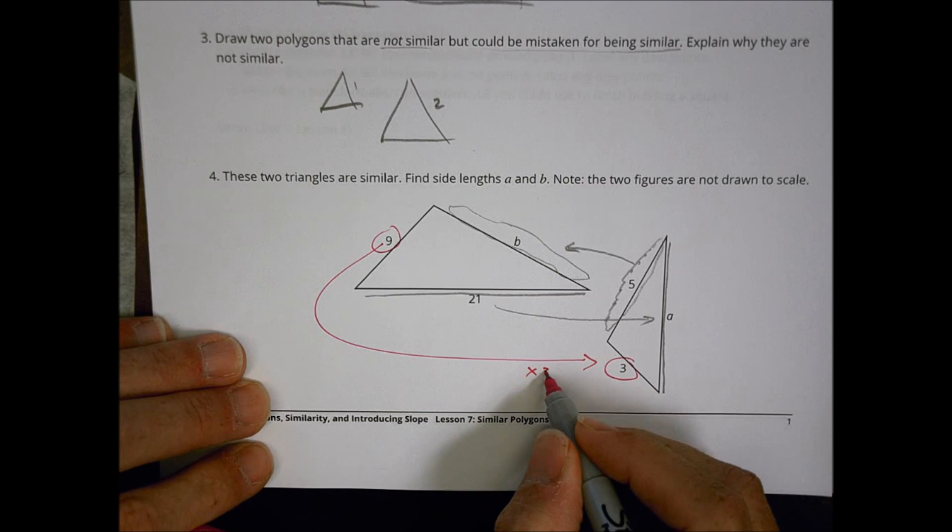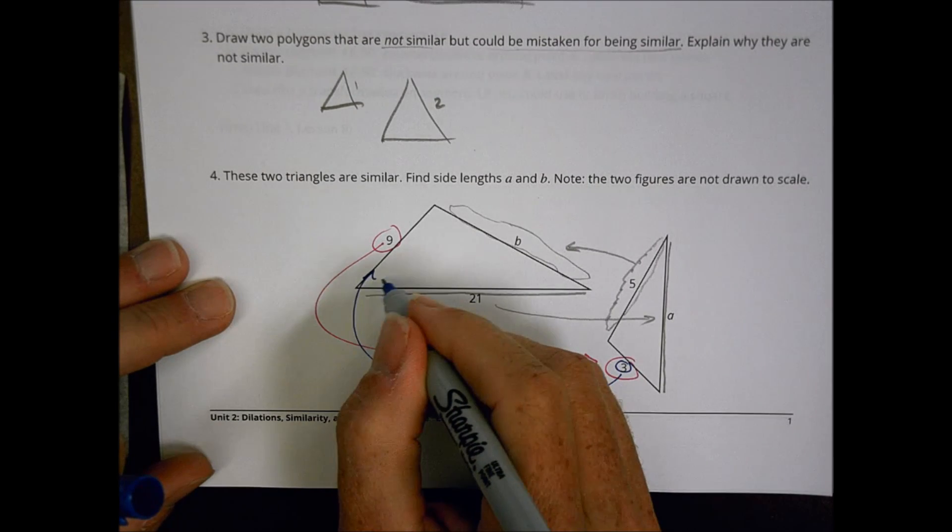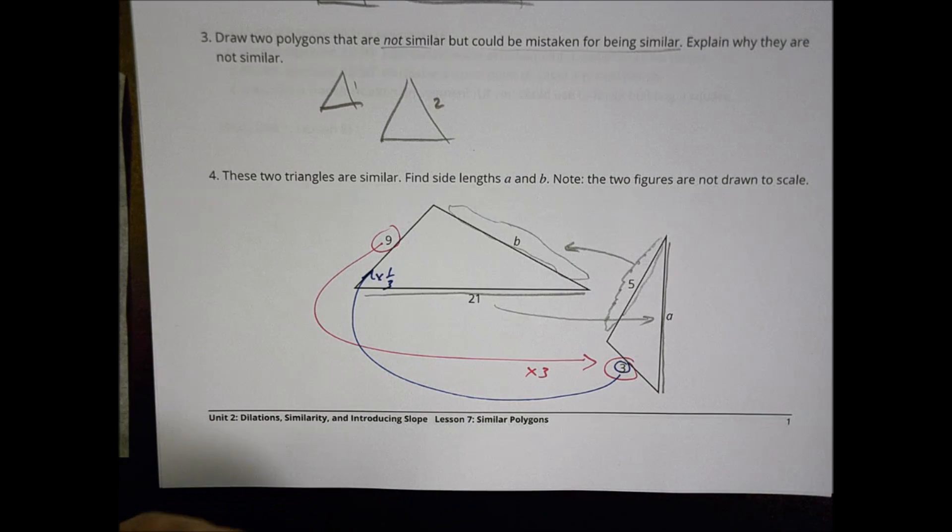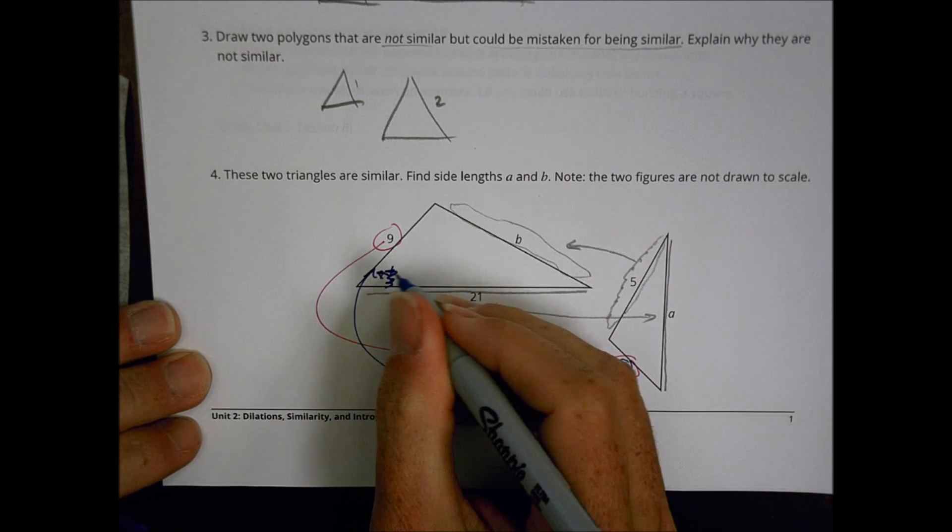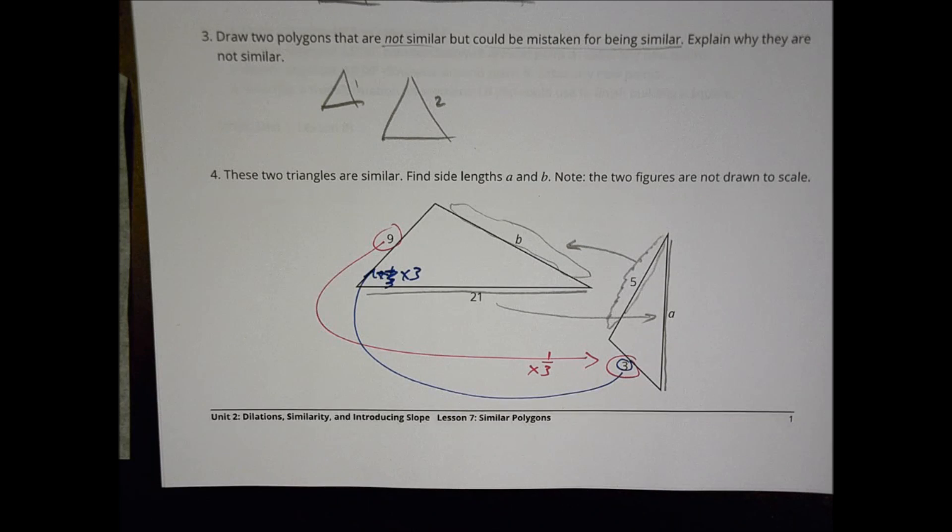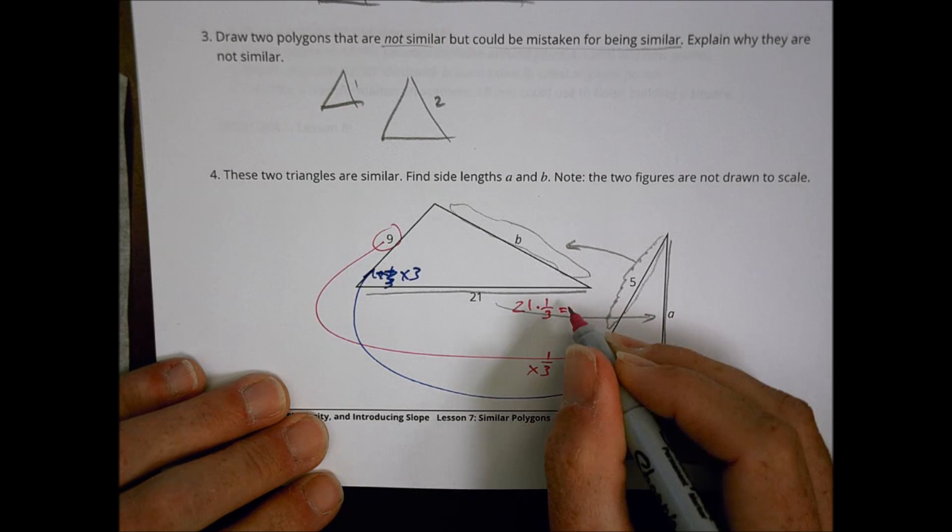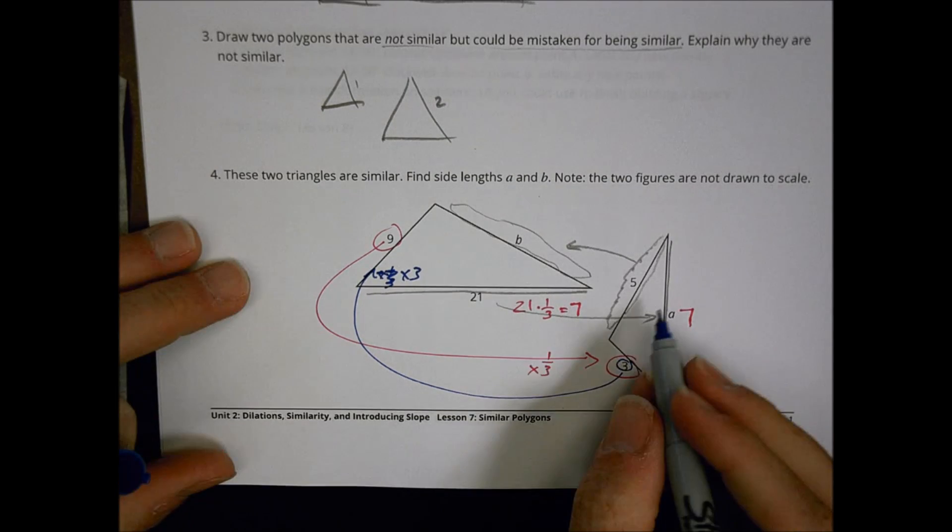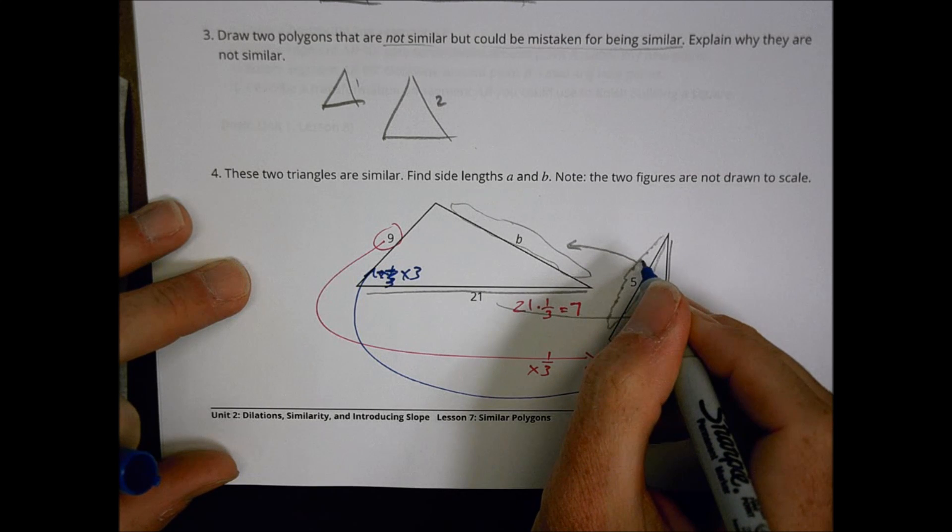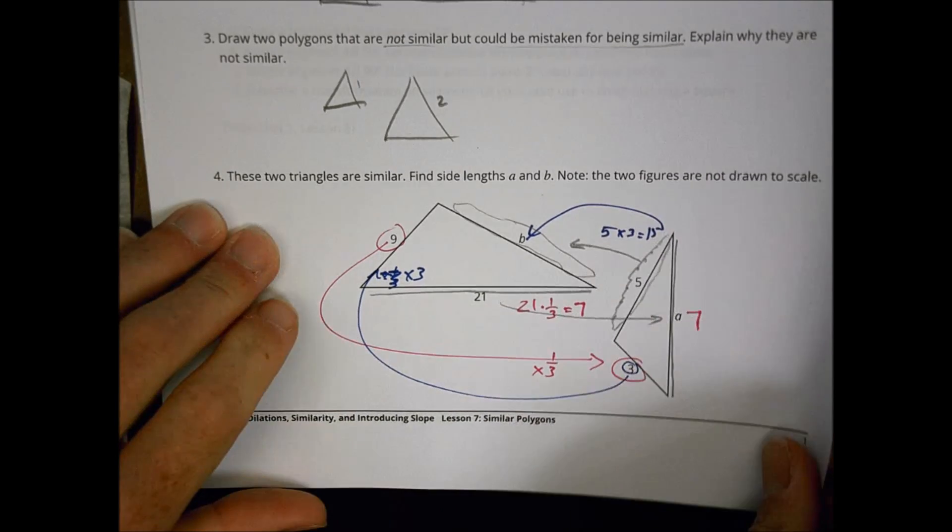So, to get from 9 to 3 is times 3 but to get from 3 to 9 is going to be times 1 third. So, with that in mind, let's take a look at what we're going to be doing. I did times 3. Sorry. This is times 1 third that way. Got ahead of myself. And this one is times 3. Sorry about that. So, let's take a look then at 21 moving this direction times a third is going to equal 7. So, A would be equal to 7. And then to go from 3 to 9 is times 3. So, 5 times 3 is going to be 15. So, we would say that B is equal to 15.